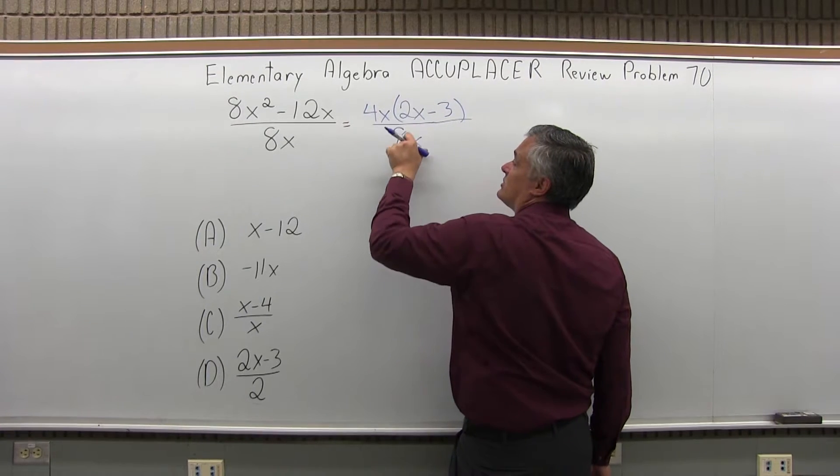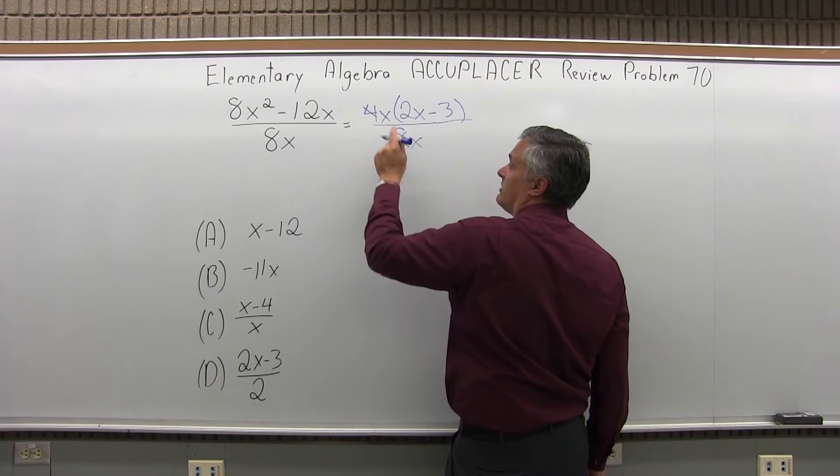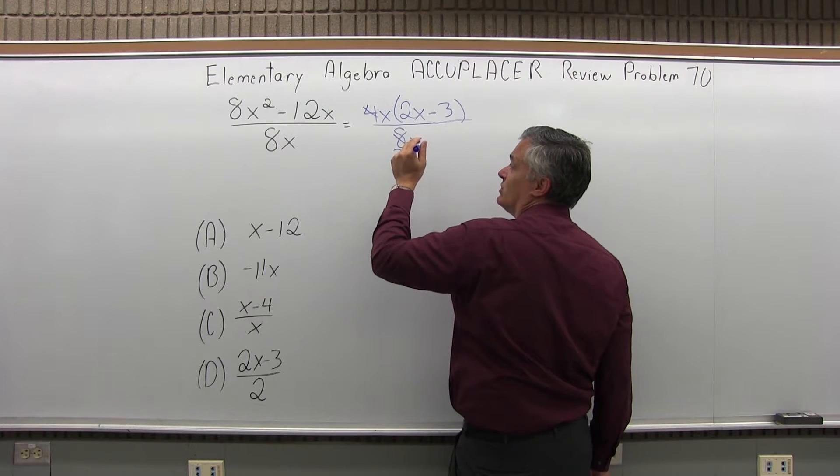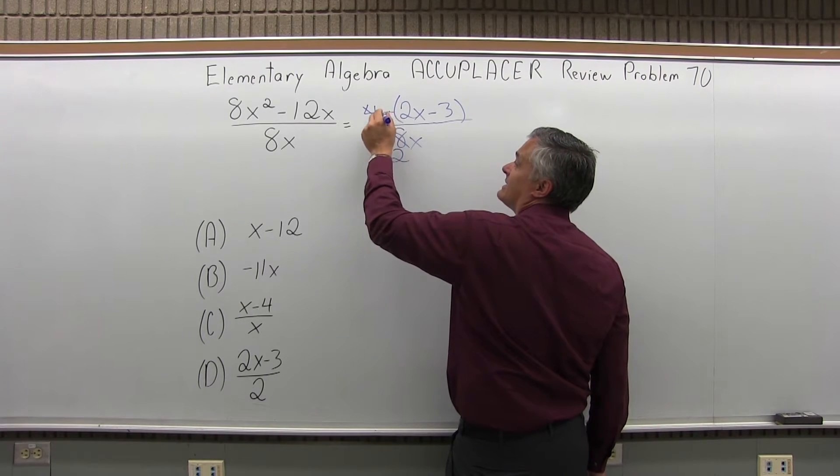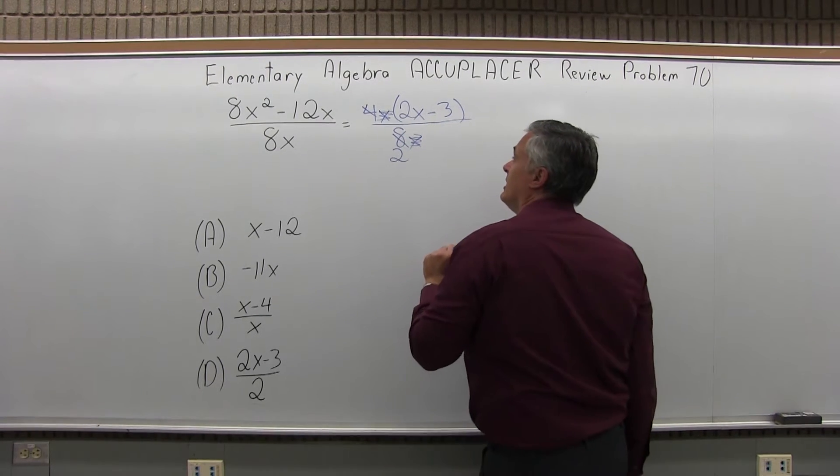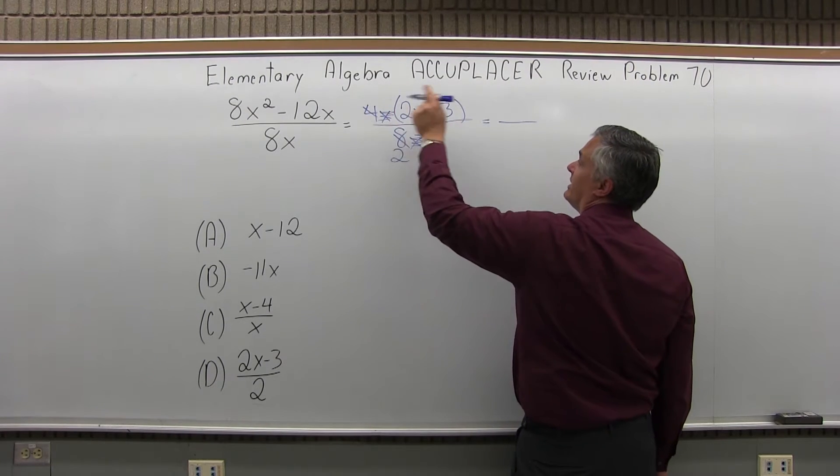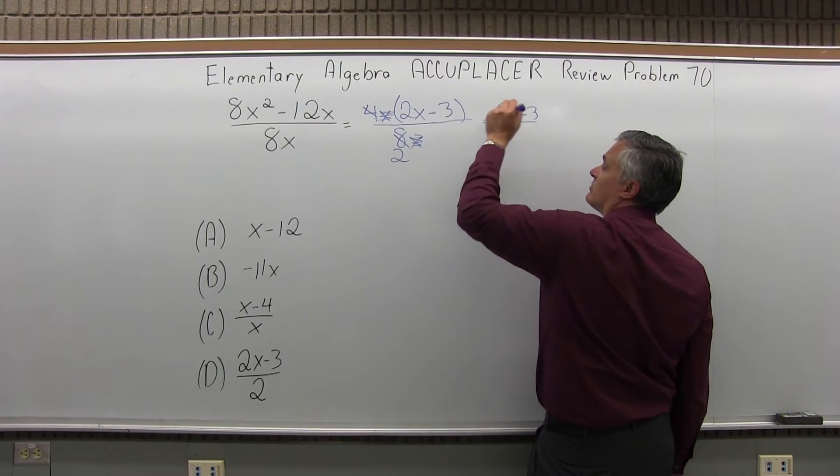Now, 4x times the parentheses over 8x. The 4 and 8 can reduce - the 4 is gone completely, the 8 becomes 2. The x from the top cancels the x in the bottom. So what's left - the 4x is completely gone from the top, and I have 2x minus 3.